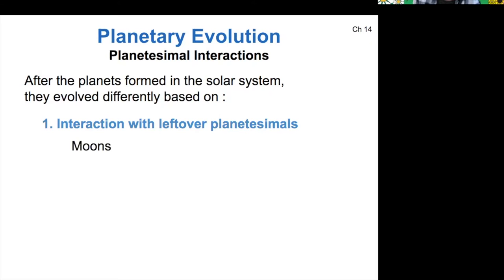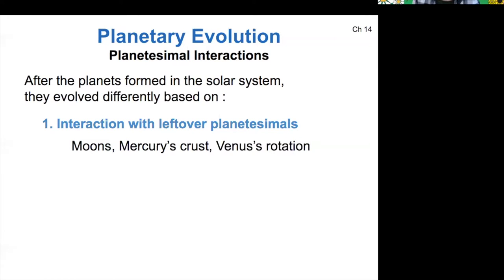We've seen a few different examples. Planetesimal interactions could create moons, like our moon that was created in a giant collision with a planetesimal. They can lead to changes in the composition of a planet. Mercury was the victim of some large collision that ripped off most of its crust, such that it has a large amount of core compared to its overall volume. Venus is actually spinning upside down, and it's most likely a giant collision that led to that as well. Lots of interactions and collisions in the early solar system can cause big differences between these terrestrial worlds.